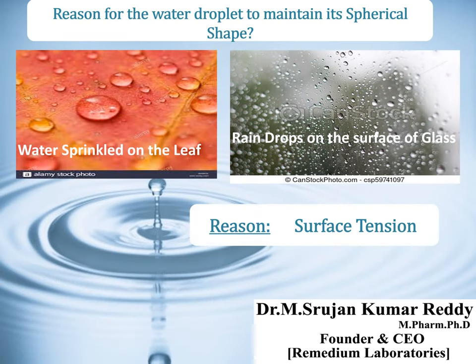Have you ever imagined what would be the reason for a water droplet to maintain its spherical shape? Here I have quoted two images — one is water sprinkled on a leaf, and the other is raindrops on the surface of glass. Any water you sprinkle on any surface, ultimately that water droplet will acquire a spherical shape. The reason is nothing but surface tension.